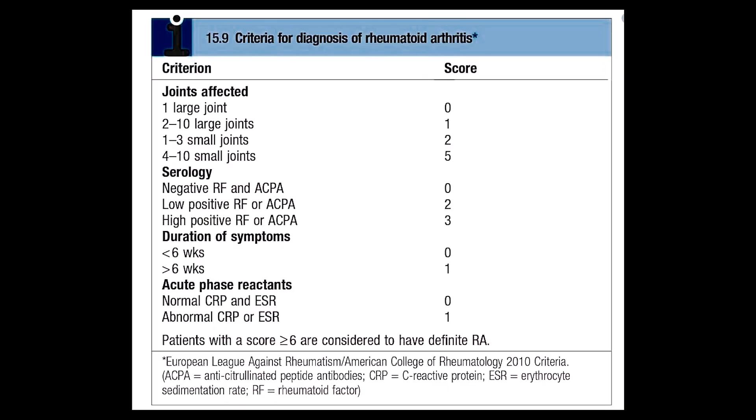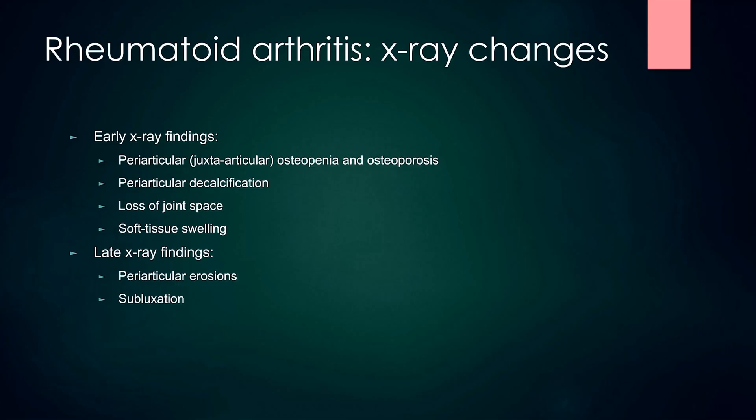There is a point system to diagnose rheumatoid arthritis — if someone scores 6 or more out of 10 points, they would definitely have rheumatoid arthritis. Typical early X-ray findings include periarticular osteopenia and osteoporosis, periarticular decalcification, loss of joint space and soft tissue swelling. In later stages, we can see periarticular erosions and subluxation.